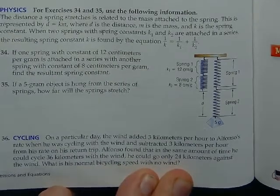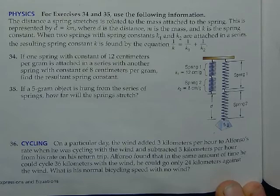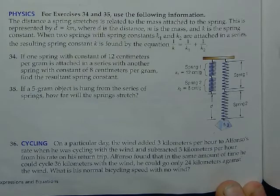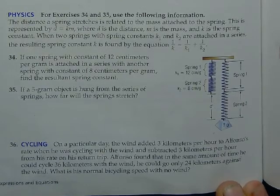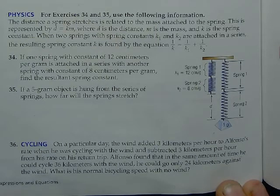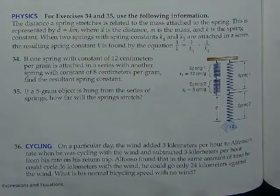Alright, let's take a look at page 510, problem 36. This is another problem that you will typically find on SAT tests and the like. On a particular day, the wind added 3 kilometers per hour to Alfonso's rate when he was cycling with the wind. And it subtracted 3 kilometers per hour from his rate on his return trip. That makes sense that when the wind's at his back, it's kind of making him go faster. And when the wind's in his face, it makes him slow down by that same amount. Alfonso found that in the same amount of time he could cycle 36 kilometers with the wind, he could go only 24 kilometers against. What is his normal bicycle speed with no wind?